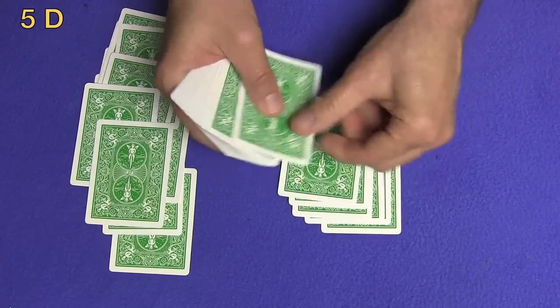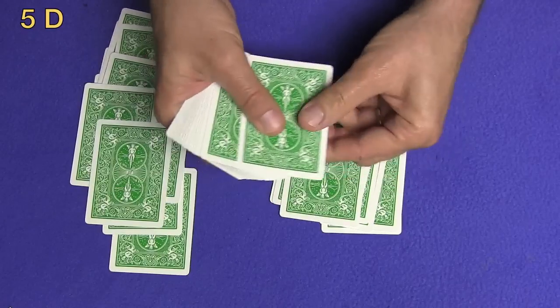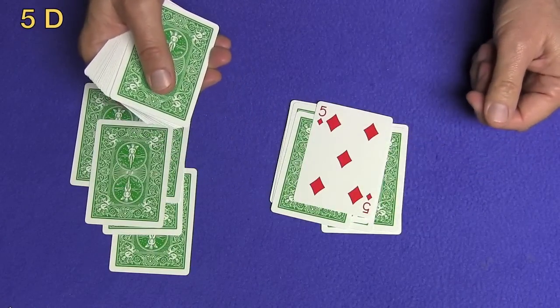One, two, three, four, five, six, seven, eight, nine, ten, eleven. And the 12th card is the five of diamonds.